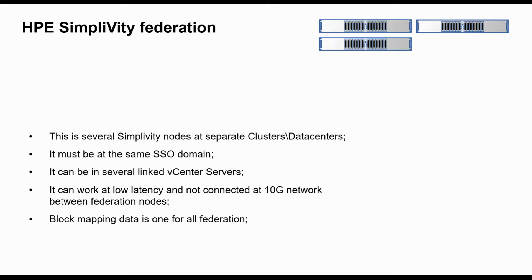In most cases, this is geographically distributed SimpliVity nodes in separated virtual data centers, connected between each other only by management interface, but still aware of all data blocks across the federation. That helps VM migrations, backups, and restore very quickly. That means you can restore all VMs after a disaster or save very important data to a NAS data center.